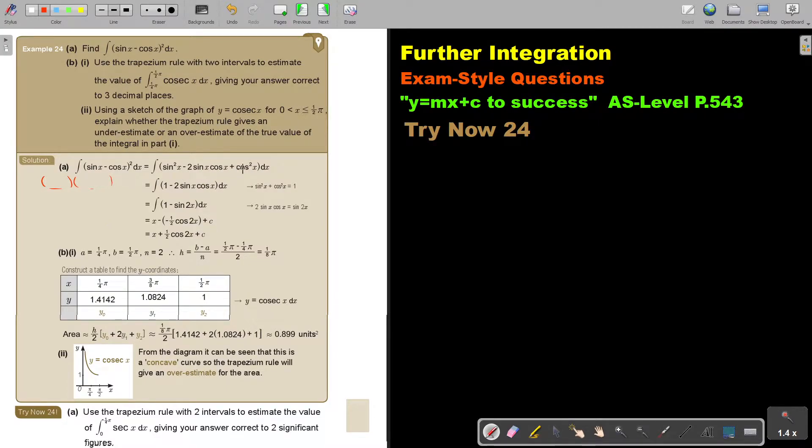And then if I simplify, don't forget, sin square x plus cos square x is 1. Then I get this. And then don't forget also, that's the reverse of the double angle. Can you remember the rule I showed you in the previous video? So then it's sin 2x.